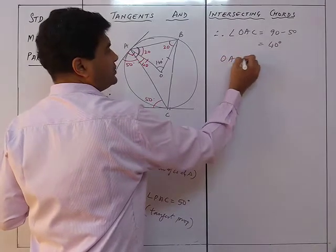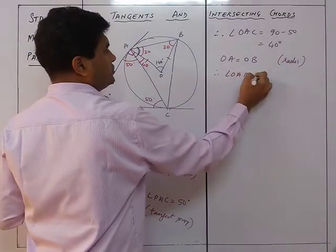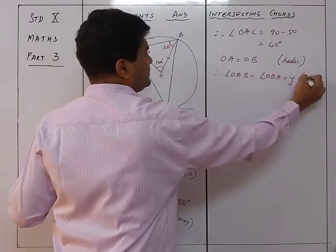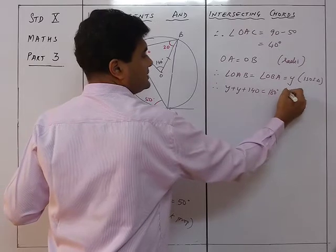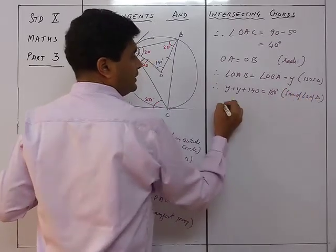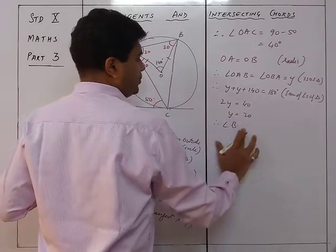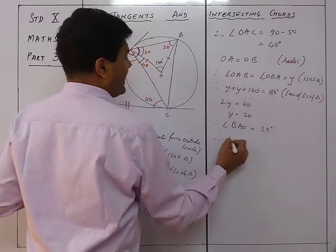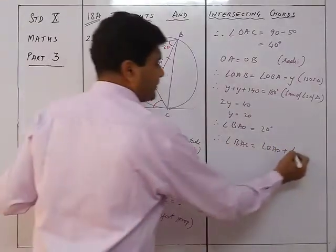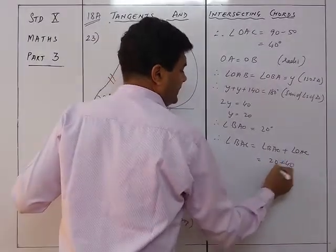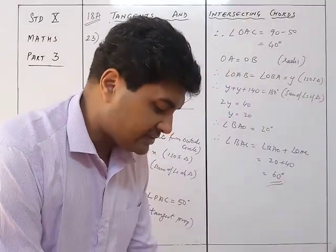OA equals OB (radii), so triangle OAB is isosceles. Let angle OAB = angle OBA = Y. Then Y + Y + 140 = 180, so 2Y = 40, Y = 20 degrees. Therefore angle BAO = 20 degrees. Finally, angle BAC = BAO + OAC = 20 + 40 = 60 degrees. That was sum 23 of exercise 18A.